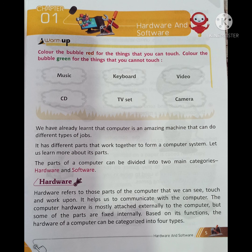Students, you all know that a computer is a very unique machine that can do our work easily. To create a computer system, there are many parts that work together. Let us learn more about it in this chapter. The computer has been divided into two parts: Hardware and Software.